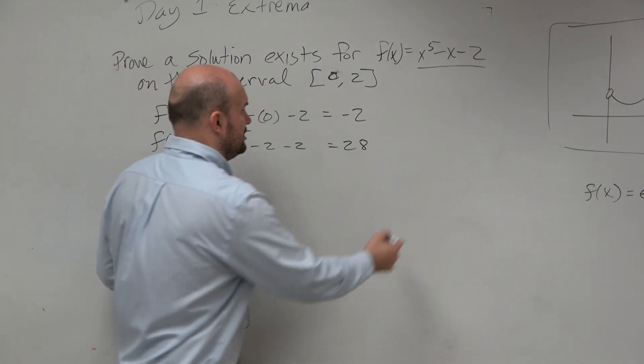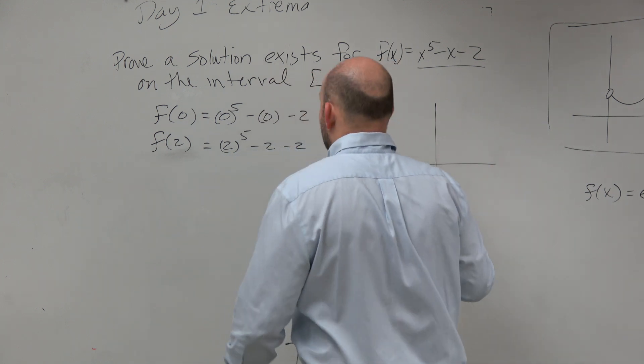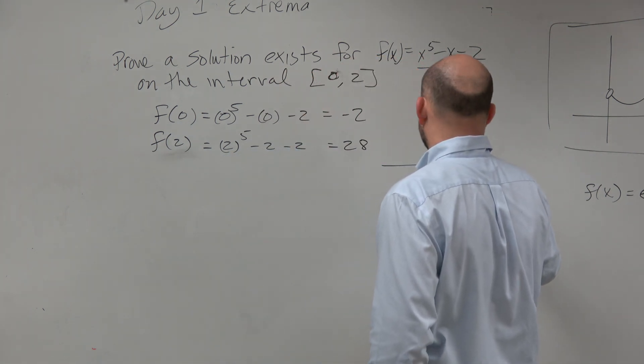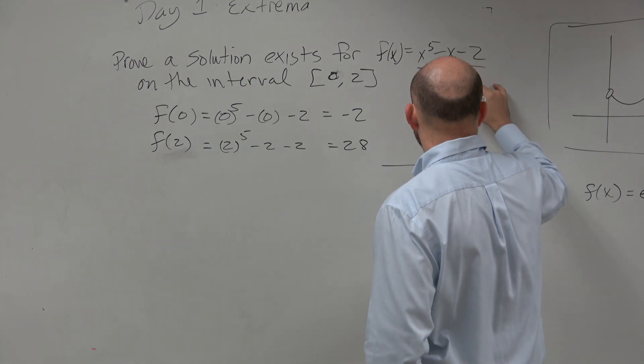So let's kind of look at this. At 0, we're at negative 2. At 2, we're at 28.